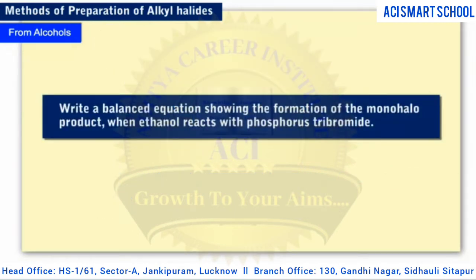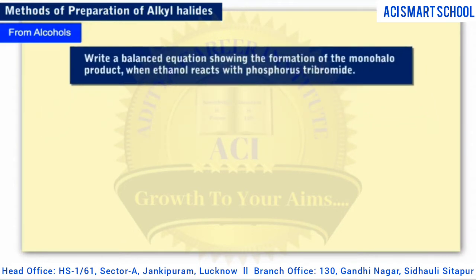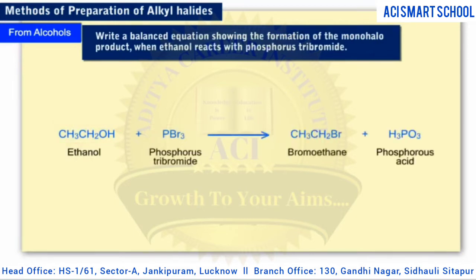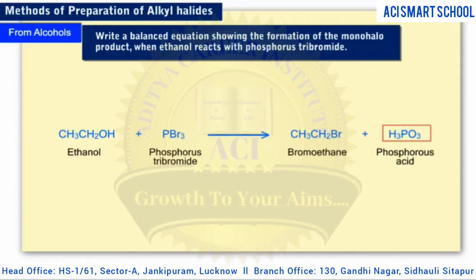Now, write a balanced equation showing the formation of the monohalo product when ethanol reacts with phosphorus tribromide. Start by writing out the formulae for the reactants. You should recognize the pattern: an alcohol reacts with a phosphorus halide to make an alkyl halide. So the monohalo product is bromoethane. Phosphorous acid is the other product. Be sure to balance the equation.